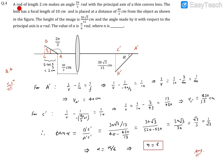Fourth problem: A rod of length 2 centimeters makes an angle 2π/3 radians with the principal axis of a thin convex lens. The lens has a focal length of 10 centimeters and is placed at a distance of 40/3 centimeters from the object as shown in the figure.